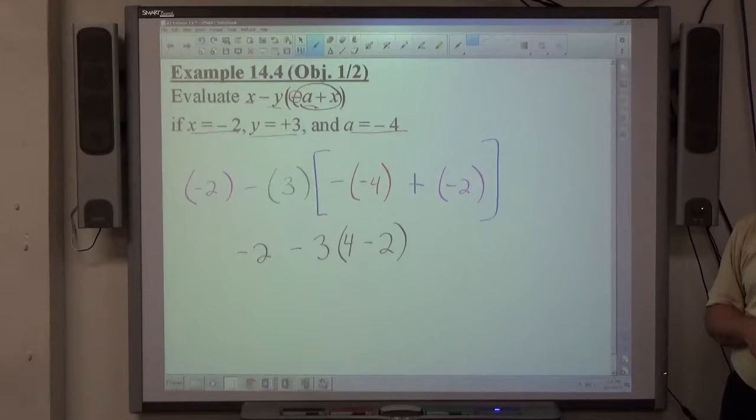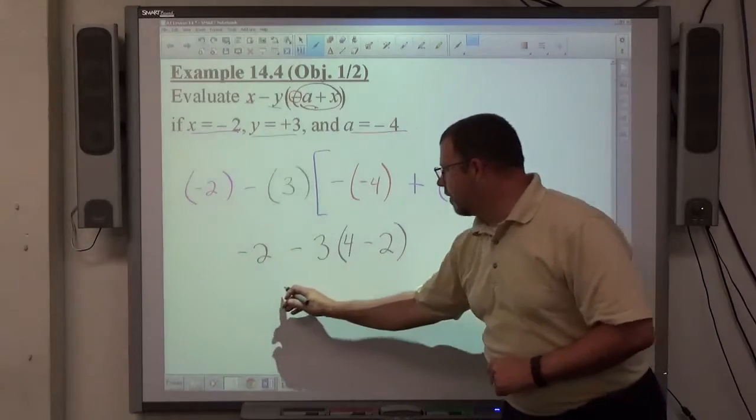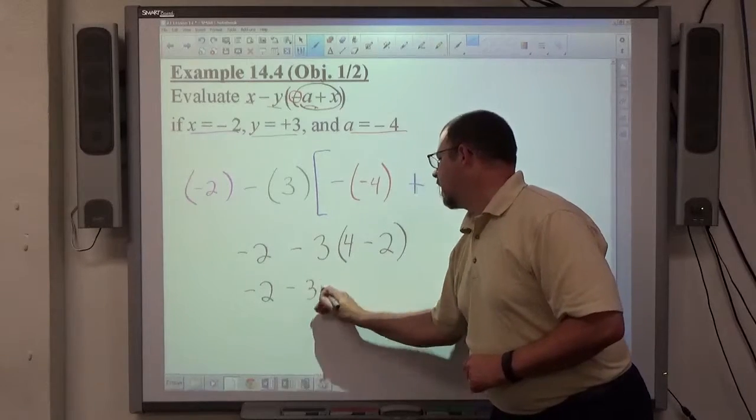So we start off there. 4 minus 2 is equal to 2. So, I'm down to negative 2 minus 3 times 2.